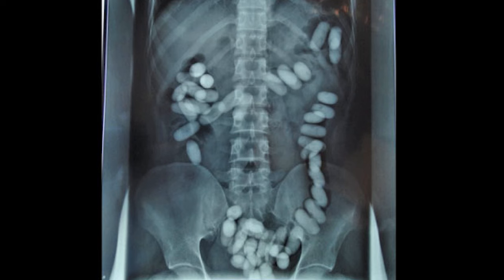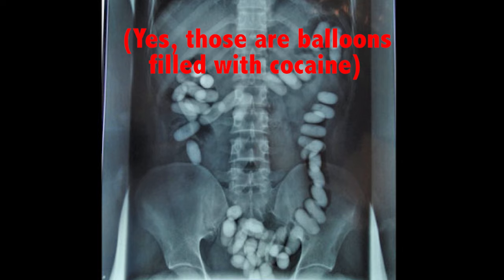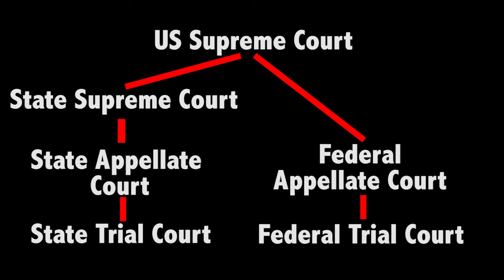Federal court cases are usually different — they typically involve questions of federal law. For instance, a lot of drug trafficking invokes federal law. Maybe it's a case that involves interstate commerce where we don't want one state to decide it because they'll be biased, so we move it to federal court. Overall, these cases usually trigger some kind of federal law. The two systems act very similarly but usually deal with different legal questions.